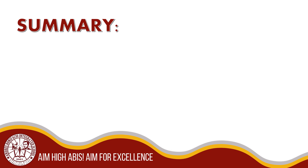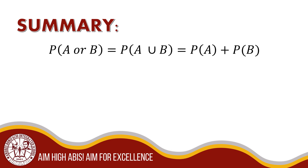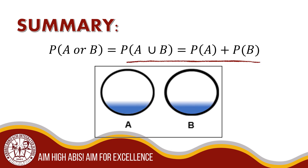Now we are in the summary portion of the discussion. A compound event is the combination of two or more simple events with more than one outcome. It is also the probability of compound events that combines at least two simple events — either the union of two simple events or the intersection of two simple events. To find the probability of the union of two mutually exclusive events, we add the probabilities of each of the events, or basically find A union B by putting all elements of A and B together. This is also called the probability of the union of mutually exclusive events, or disjoint.